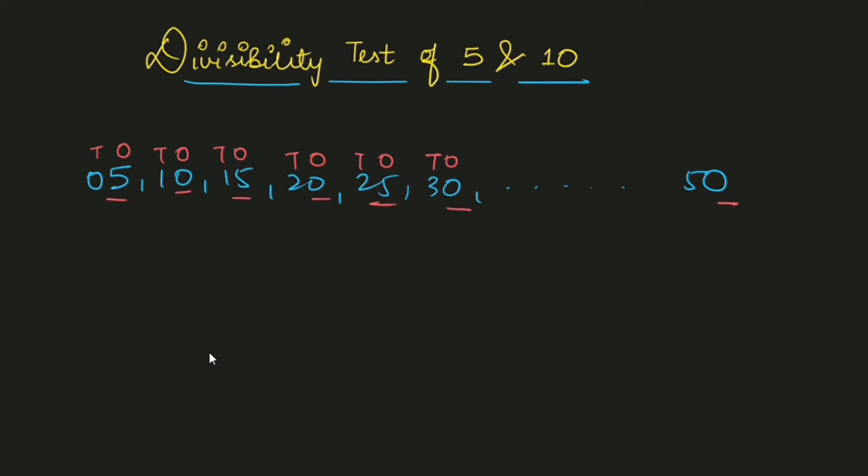What does this mean? It means that if you take any big number, if the last digit of any number is 5 or 0, then it will be divided by 5.